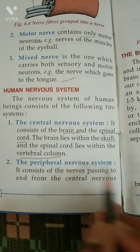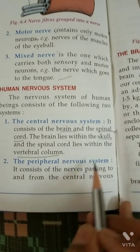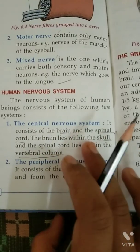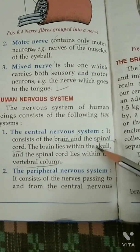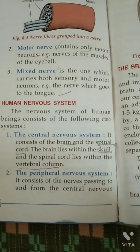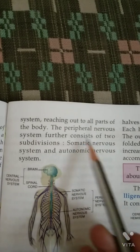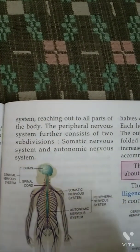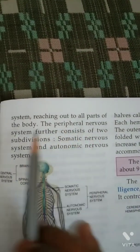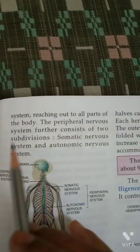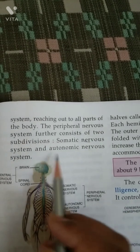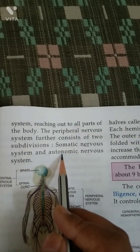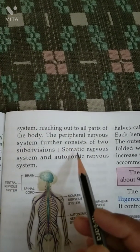The Peripheral Nervous System consists of the nerves passing to and from the central nervous system — the nerves that pass from the central nervous system, reaching out to all parts of the body. The peripheral nervous system has two subdivisions: the somatic nervous system and the autonomic nervous system.